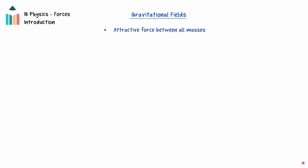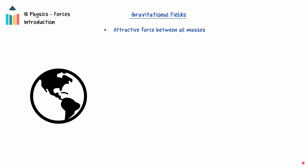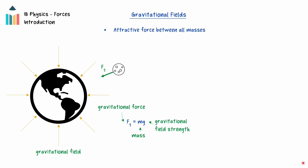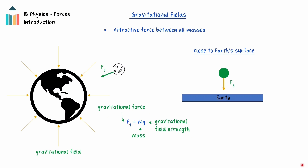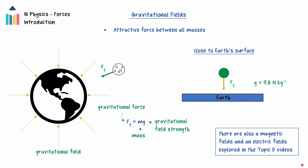The force of gravity is an attractive force that acts between all masses. Masses create regions in space called gravitational fields in which another mass will experience an attractive gravitational force. These concepts are covered in depth in this series of videos on fields. The force of gravity acting on an object in another object's gravitational field is equal to the mass of the object times the gravitational field strength, lowercase g, at that point in the field. Close to the surface of the Earth, the Earth's gravitational field strength is assumed to be a constant 9.8 newtons per kilogram. This value will decrease as the distance from the Earth increases, and other planets and moons will have different values of g at their surfaces. Additional fields such as electric and magnetic fields are explored in the Topic D videos.